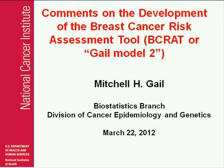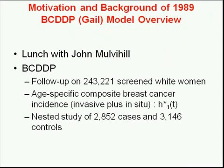Thank you very much—I haven't been called the godfather before. I was asked by Andy to talk about how this model came about and some of the associated developments. It really started well before 1989 when I had lunch with John Mulvihill, who was treating patients in high-risk breast cancer clinics. Many people in those days had a strong family history, assumed they had an autosomal dominant disease, and thought they had a very high risk of breast cancer. He didn't think that was necessarily accurate and felt they could be better informed by a more empirical approach. He asked me to think about it and became a collaborator on the paper published in 1989.